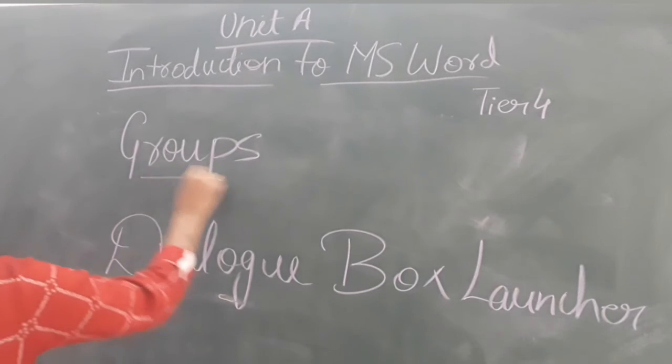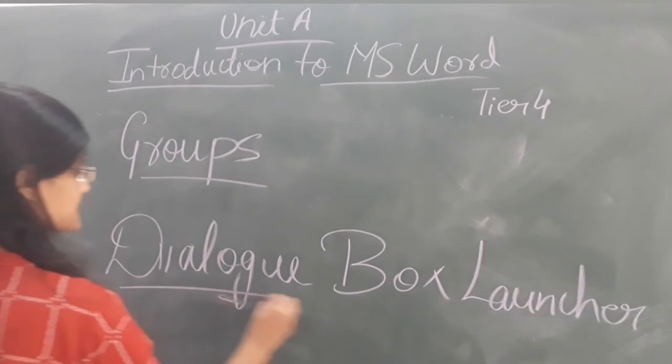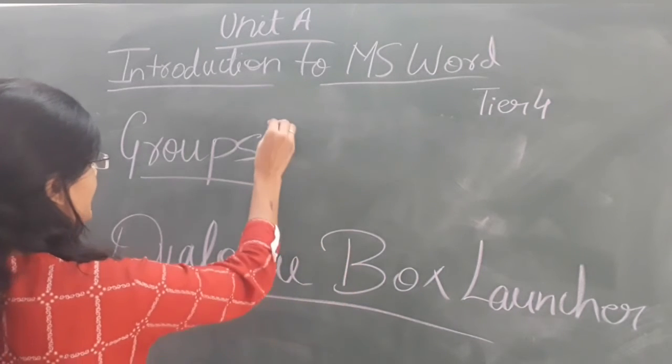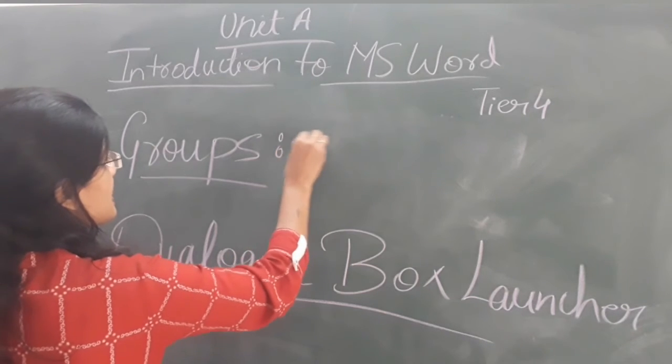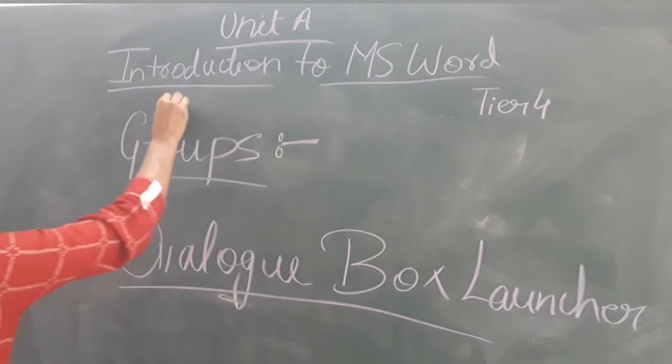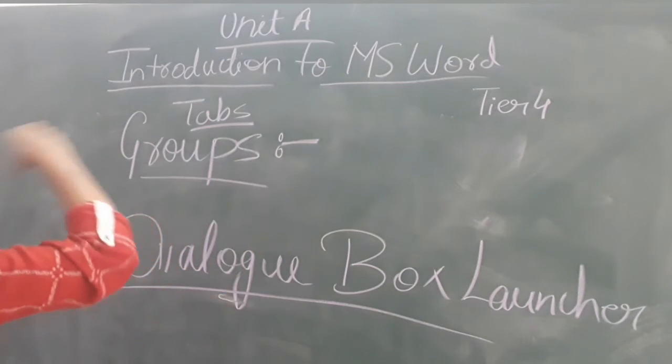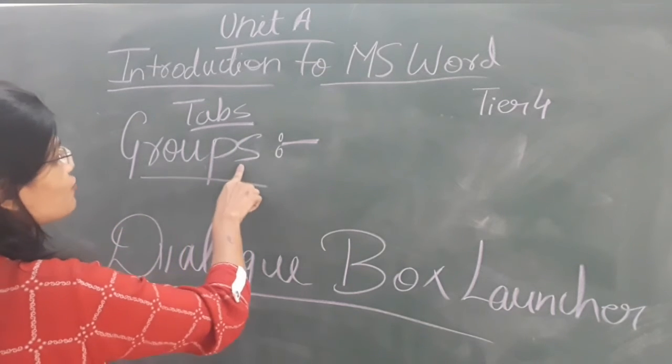Now, the next is Groups and the other next is Dialogbox Launcher. So let's see what is the function of these groups. Now, each tab is divided into groups and it has these groups that contain the command buttons. Now look, these groups, all the tabs, whatever we have studied about the tabs. Now these tabs are divided into many groups. Many groups and then each group performs the different functions.